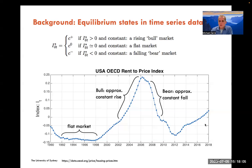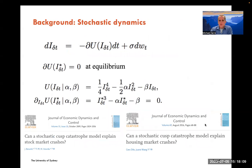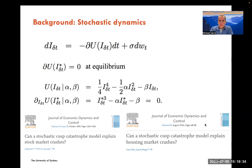To answer that we need background on the stochastic dynamics. We have the change in I_delta_T as a drift-diffusion equation: the rate of change of some potential function U — which is a function of the index I_delta_T — plus a noise term sigma dW_T, a Brownian diffusion process with variance sigma. When the market is in equilibrium, the rate of change of the potential is zero — that's the definition of an equilibrium.